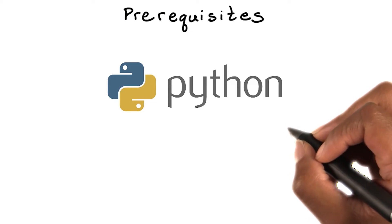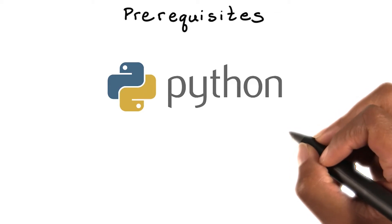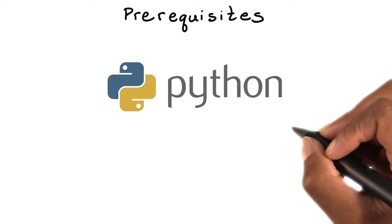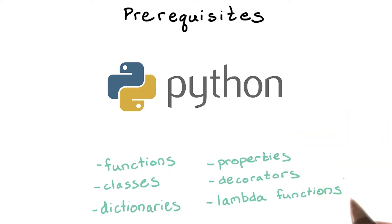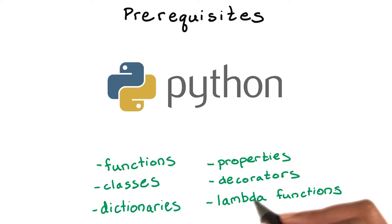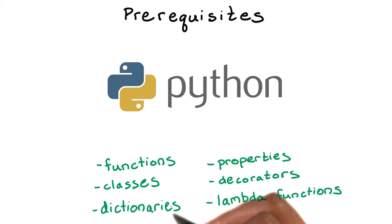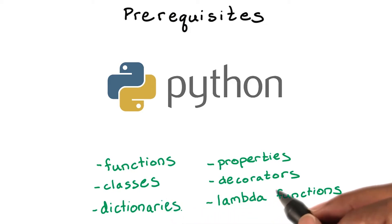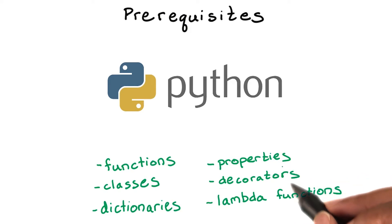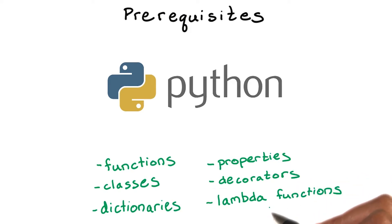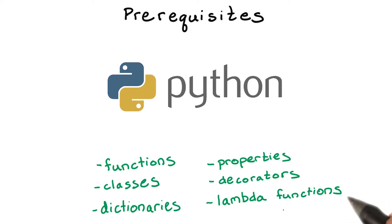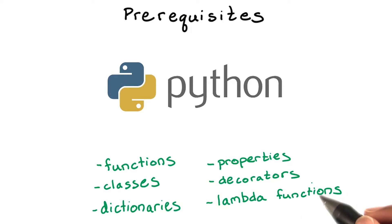In order to get the most out of this course, you should have a good grasp of Python programming. If you are comfortable making and using functions, classes, dictionaries, and understand the basics of properties, decorators, and lambda functions, you're in good shape for this course. A few links for brushing up on these topics are available in the instructor notes.